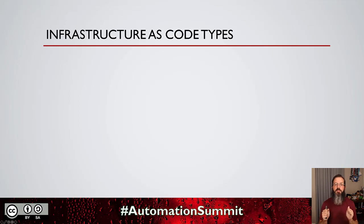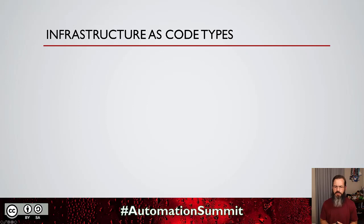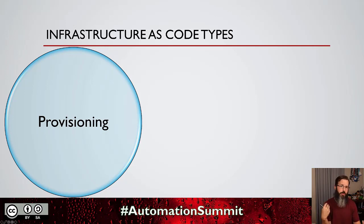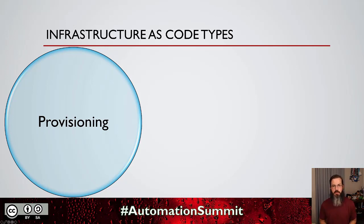Moving along, let's talk about infrastructure as code, because this ends up turning into a really big discussion — there are several types. This is especially true when we think about the different products and tools we can interact with. The biggest type out there is probably the concept of provisioning: you create or describe what you want your infrastructure or objects to look like, it goes out and does it, and when you're done, all you have to do is tear it down. Very simple, very straightforward.